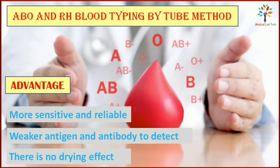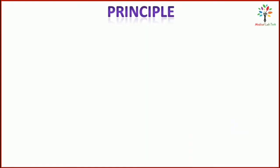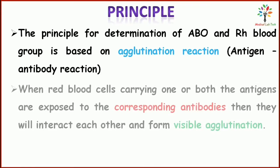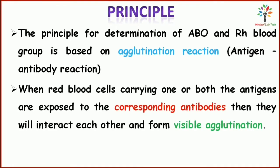Now let's move on to the principle of the test. The principle for determination of ABO/Rh blood group is based on agglutination reaction, or antigen-antibody reaction. When red cells carrying one or both antigens are exposed to the corresponding antibodies, they will interact with each other and form visible agglutination.